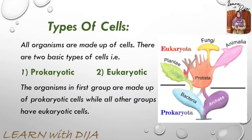Types of cells: some organisms are made from different cells. Cells are divided into two groups — prokaryotic and eukaryotic. Organisms in the first group are made of prokaryotic cells, while the other group is called eukaryotic.